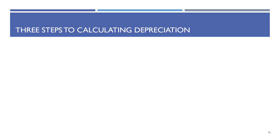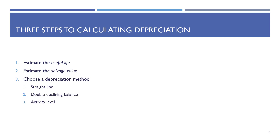There are basically three steps to calculate depreciation. The first is to estimate the useful life, the second is to estimate the salvage value, and the third is to choose your depreciation method — that would be straight line, double declining balance, or the activity level.